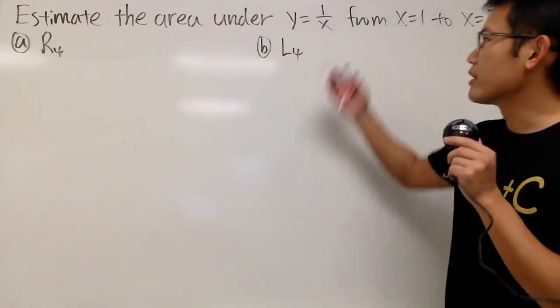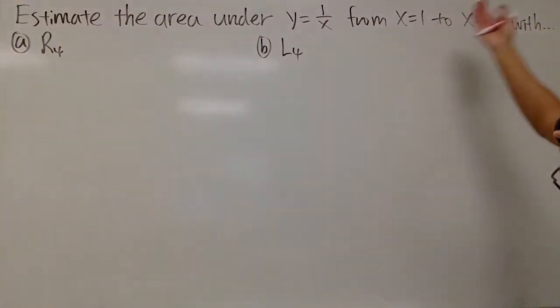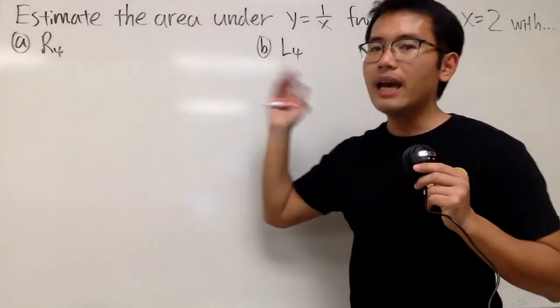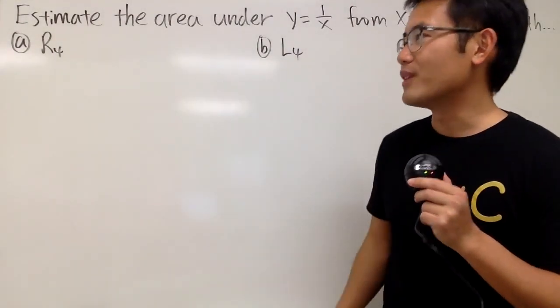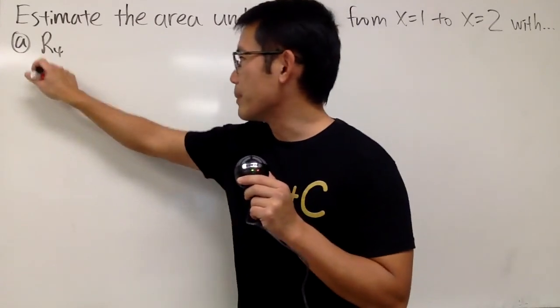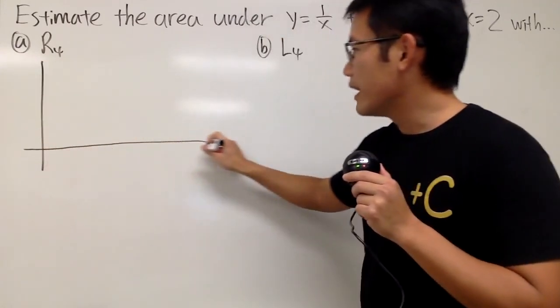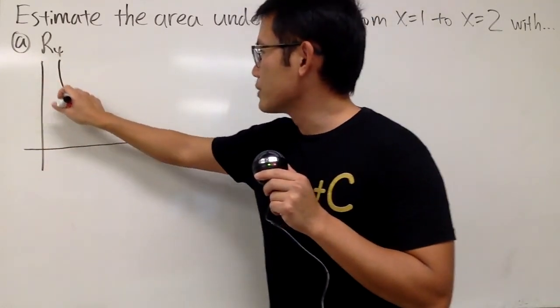I will show you guys how to estimate the area under the curve 1 over x from 1 to 2 with R4 and L4. Let's start with this one first. I will give you guys a picture right here. The picture is just 1 over x, and it will look something like this.